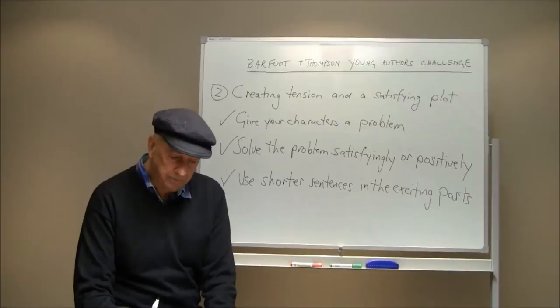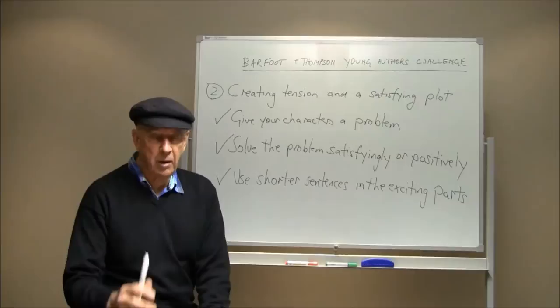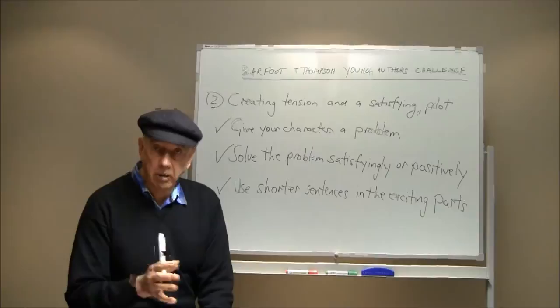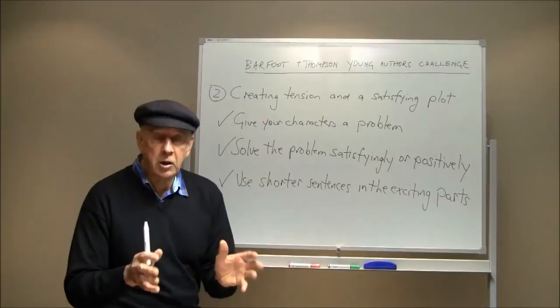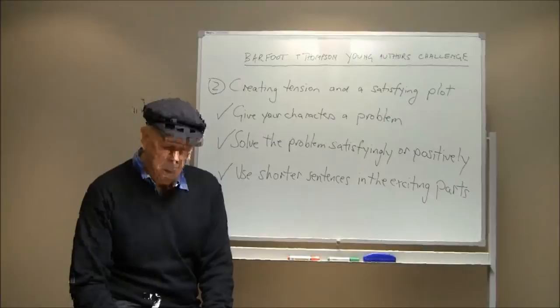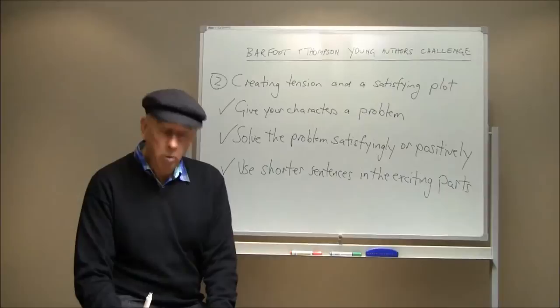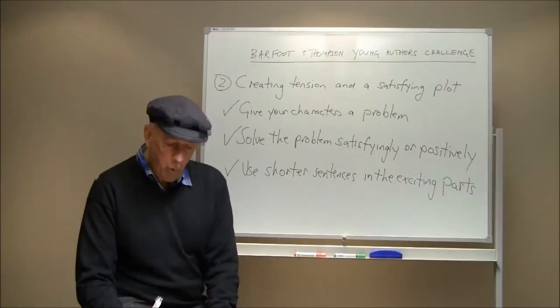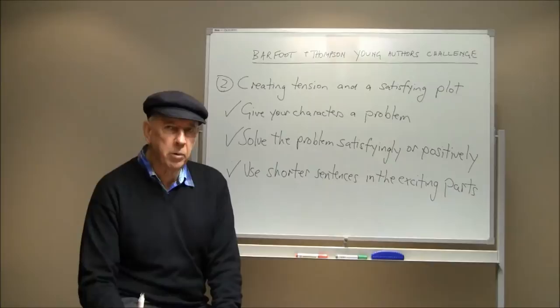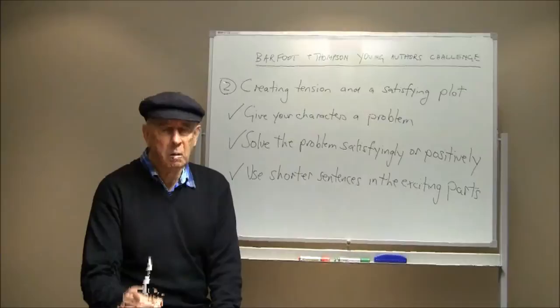Thinking about the possible characters from my first talk — the conceited dolphin. The dolphin has conceit as a characteristic, and maybe that conceit puts it into a fishing net. So that's a problem. Or the absent-minded boy leaves his lunch at home, or forgets his homework. Problems! Or the old tree learns that it's going to be chopped down — big problem. Or the empty shed is lonely. That's a problem.